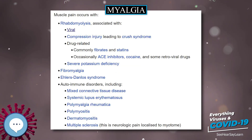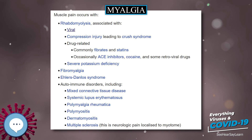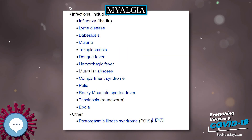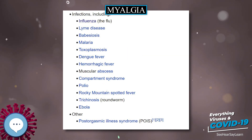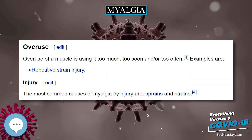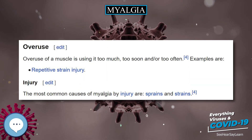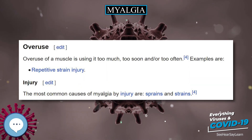When the cause of myalgia is unknown, it should be treated symptomatically. Common treatments include heat, rest, paracetamol, NSAIDs, and muscle relaxants.